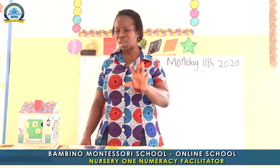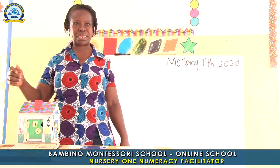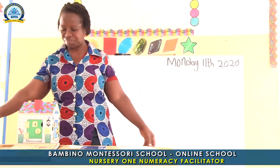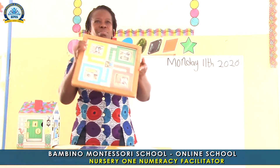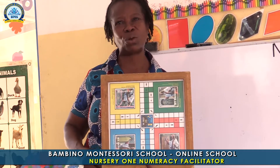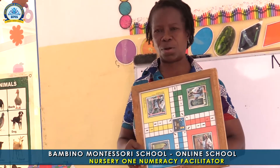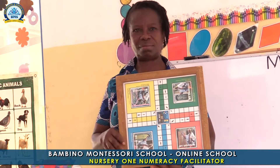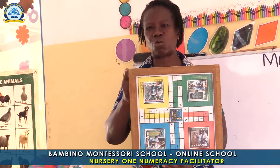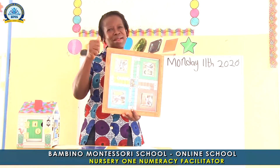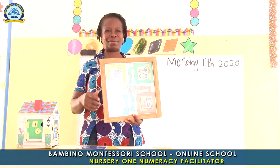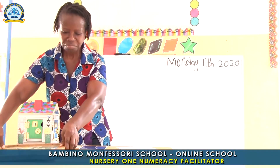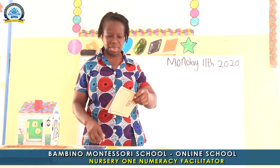Now we are coming to have fun with different types of shapes that we have around us. Good. Now let's look at this Ludo. Wow. Can you tell me the shape of this Ludo board? Yes. Auntie, it is a square. Good. Well done. My loved children, you are all doing well. Good. Now we've gotten our square.